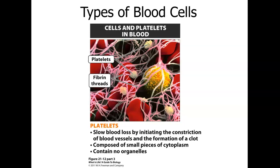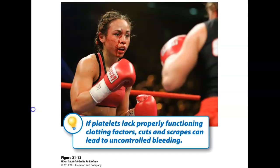When a blood vessel ruptures, fibrinogen creates sticky fibrin threads that cause platelets, red blood cells, and white blood cells to stick together, forming a platelet plug that seals the vessel until it heals. If platelets lack proper clotting factors, cuts can lead to uncontrolled bleeding — a condition known as hemophilia.